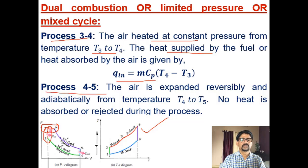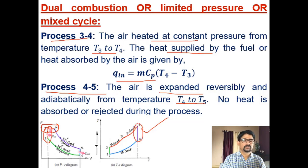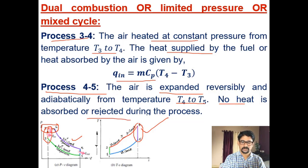Process 4 to 5 is isentropic expansion, or reversible adiabatic expansion, wherein temperature decreases from T4 to T5 — you can see 4 to 5 on the diagram — volume is increasing, pressure is decreasing. No heat is absorbed or rejected during this process, as it is isentropic.